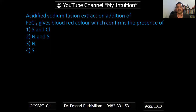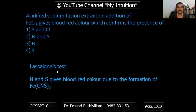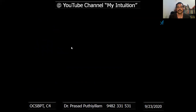Acidified sodium fusion extract on addition of FeCl₃ gives a blood-red color due to the presence of — nitrogen only, sulfur only, nitrogen and sulfur, or sulfur and chlorine? This is the Lassaigne's test. When both nitrogen and sulfur are present, a blood-red color appears due to the formation of Fe(SCN)₃. Therefore, option two — nitrogen and sulfur — is the correct answer.